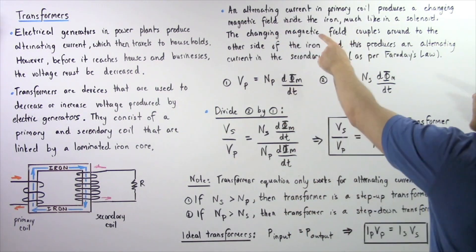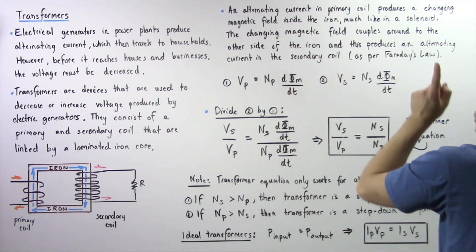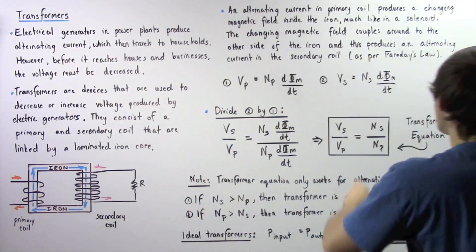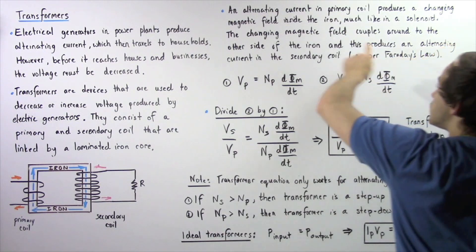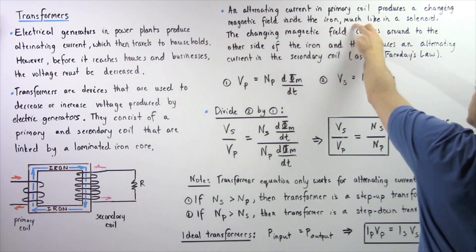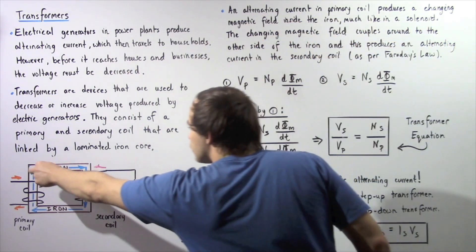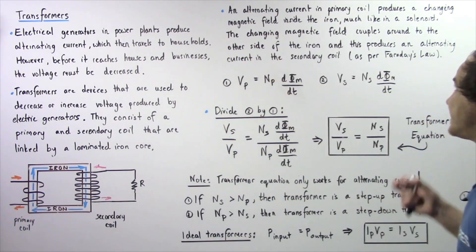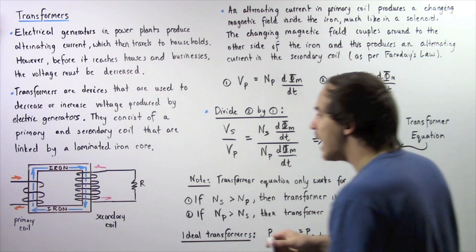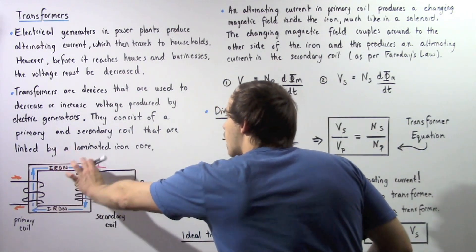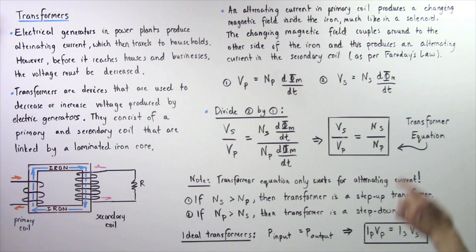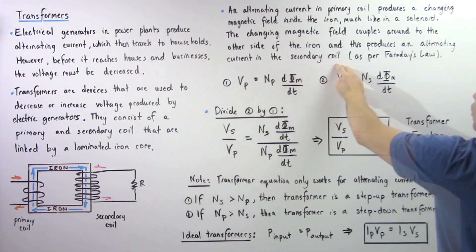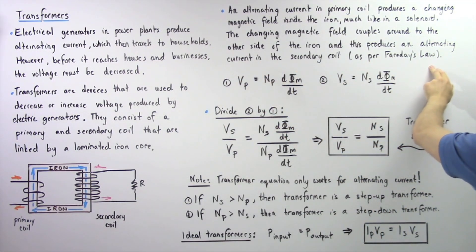An alternating electric current in the primary coil, produced by the electric generators, produces a changing magnetic field inside the iron, much like inside a solenoid. The changing magnetic field couples around to the other side of our laminated iron, and this produces an alternating current in the secondary coil, as per Faraday's law.